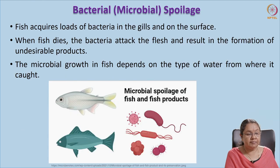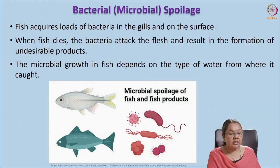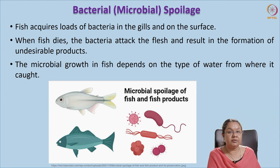The next spoilage is bacterial or microbial spoilage. The surface slime, gut, and gills harbor large loads of microorganisms. From these surfaces the microorganisms move to different parts of the body and cause spoilage. When fish dies, the bacteria attack the flesh and result in the formation of undesirable products. The microbial load and types of microorganisms on the surface of the fish depend upon the water from where the fish has been captured.